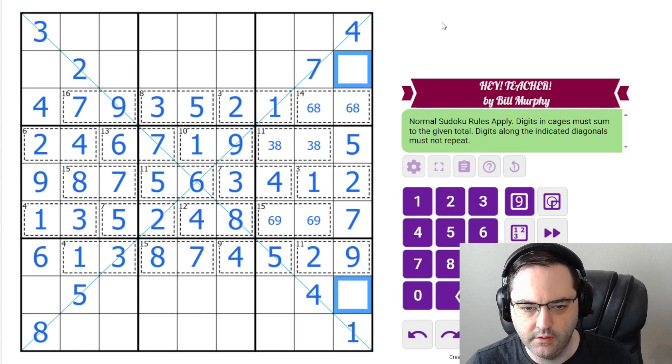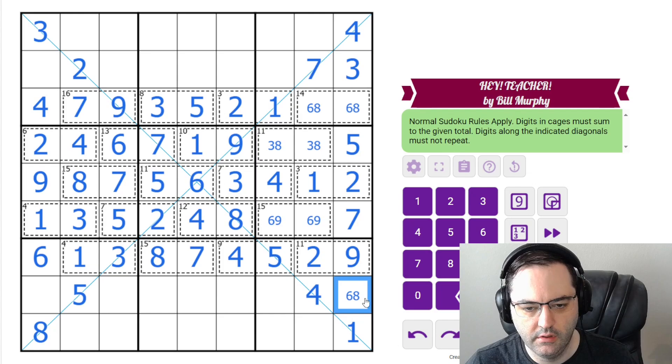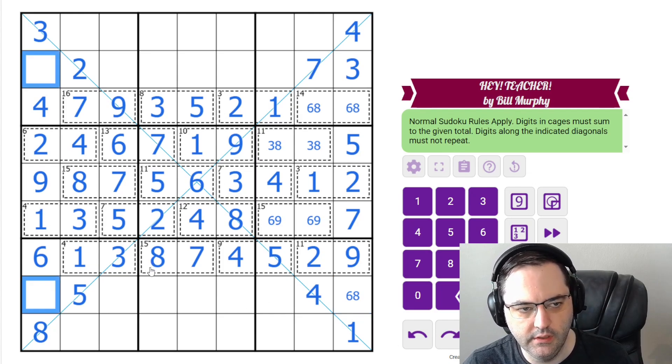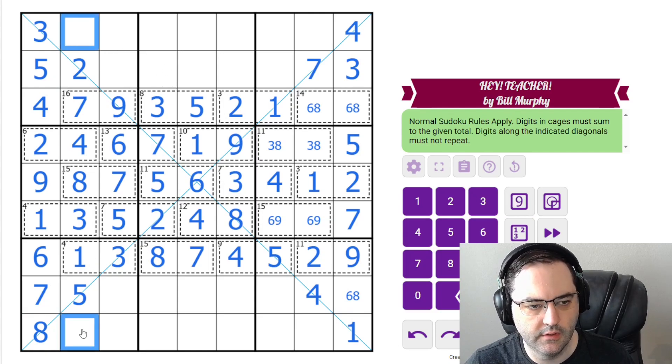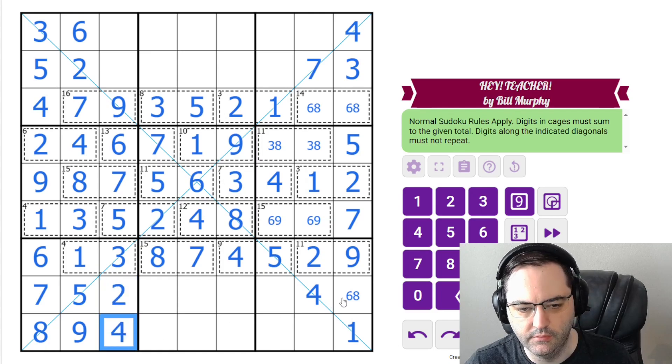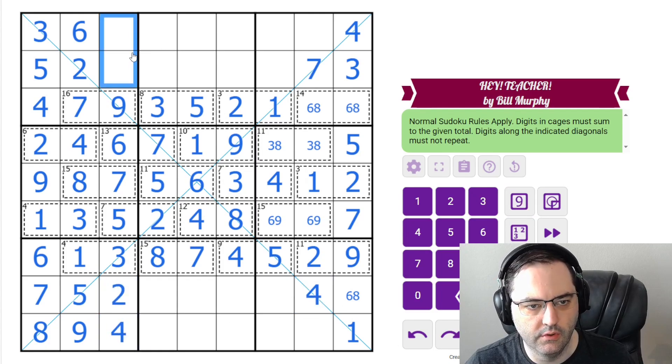Let's look at this column. We need a 3, 6, 8. 6, 8 in the box means this is the 3. In this column, we still need 5 and 7. Those are resolved. In this column, we need 6 and 9. Those are also resolved. These are 2 and 4. And these are a 1, 8 pair.